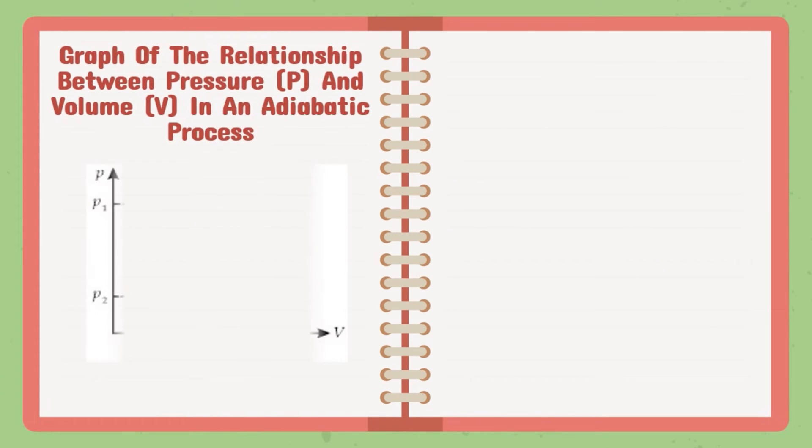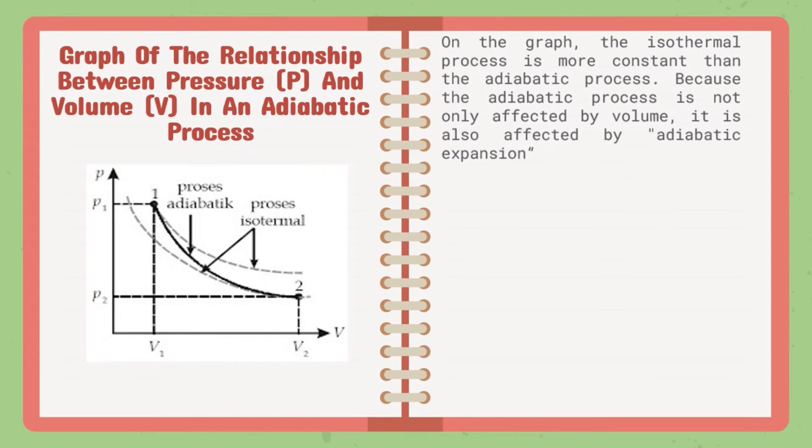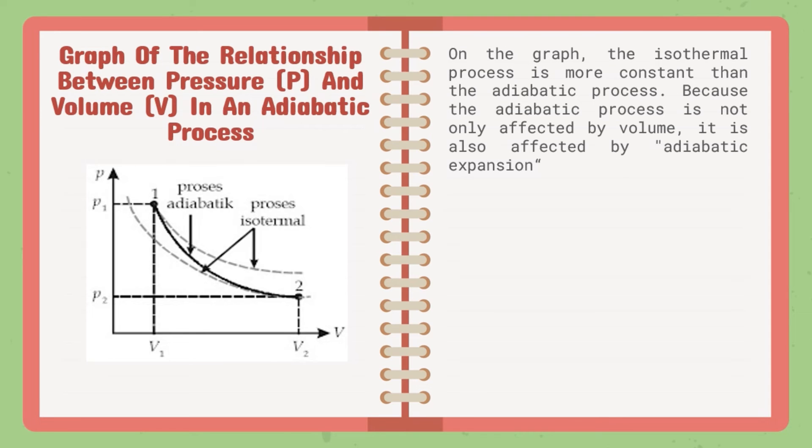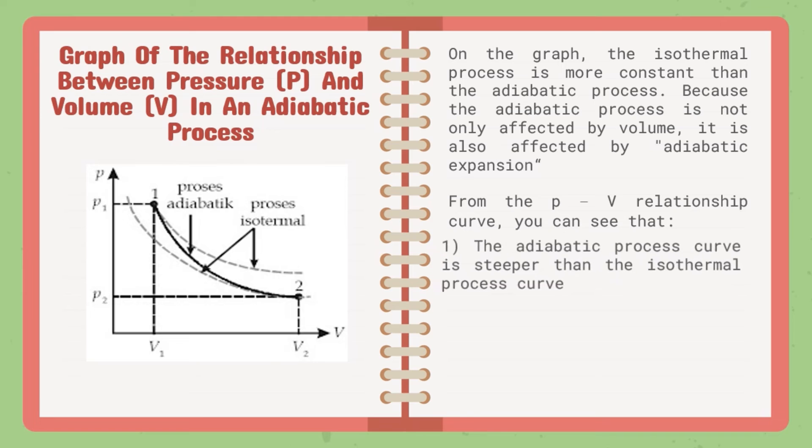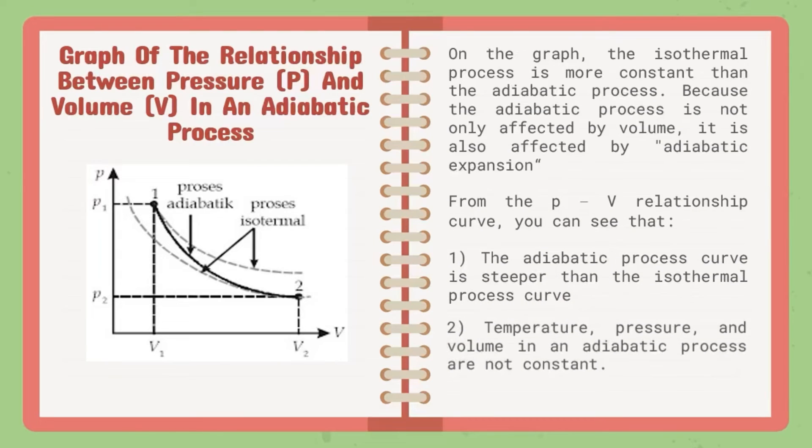Graph of the relationship between pressure P and volume V in an adiabatic process: On the graph, the isothermal process is more constant than the adiabatic process. Because the adiabatic process is not only affected by volume, it is also affected by adiabatic expansion.